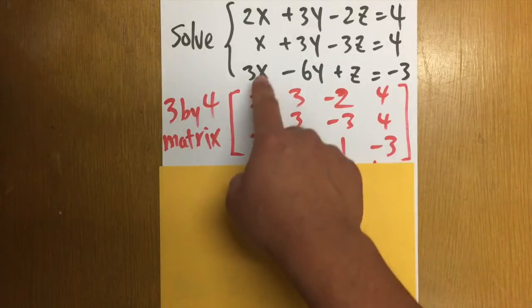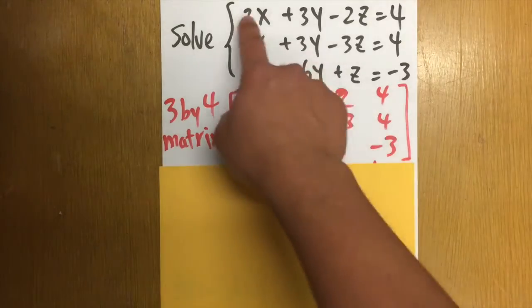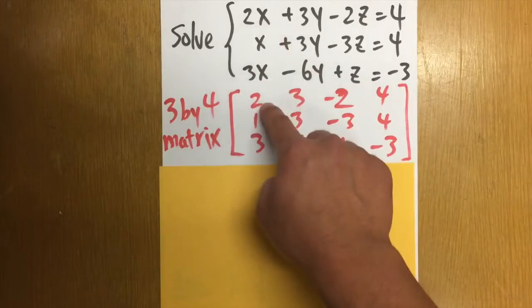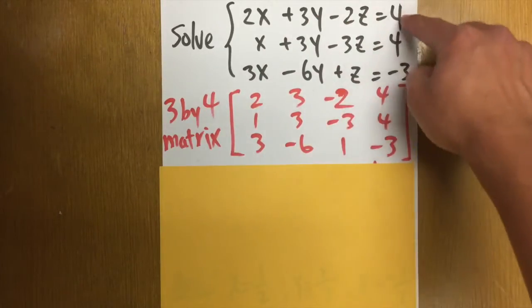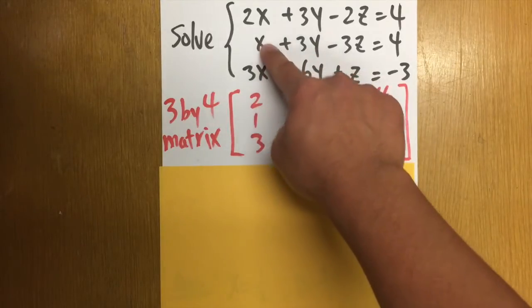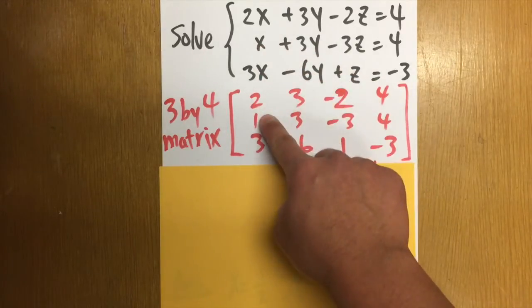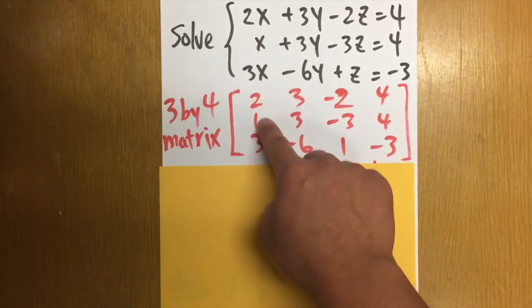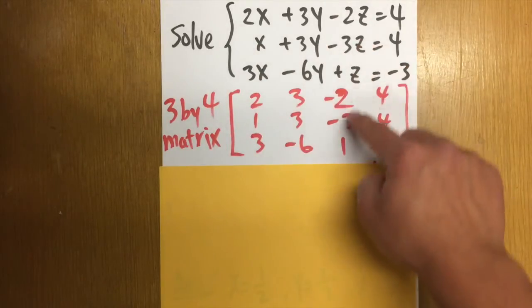So for example, the first row, these are just the numbers right here. We have the 2 here, 3, negative 2, and 4. And then for the second row, we will have 1, because that's the coefficient in front of the x. The number in front of the x is 1. And then we have 3, negative 3, and 4.